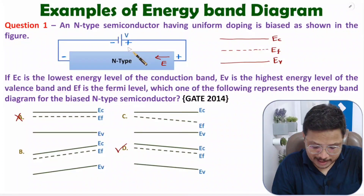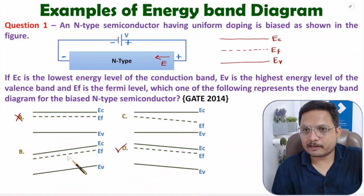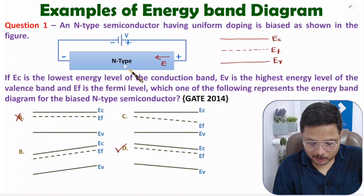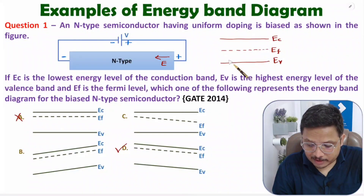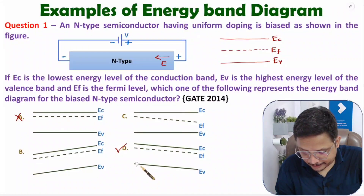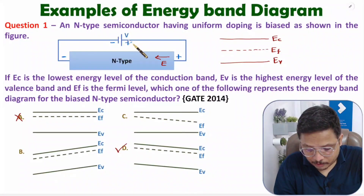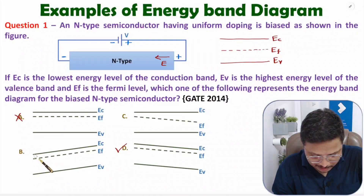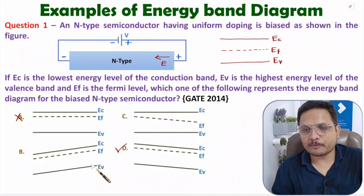With the battery connected with plus and minus as given, the situation will look like this. If the n-type material is replaced by p-type, the Fermi level shifts towards Ev. With the same connection for p-type, the Fermi level will be nearer to Ev. With reverse polarity, the Fermi level for p-type will be positioned where the lower energy value is on one side, and Ef will be somewhere accordingly.